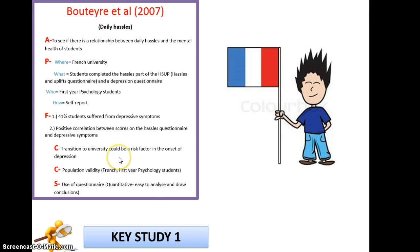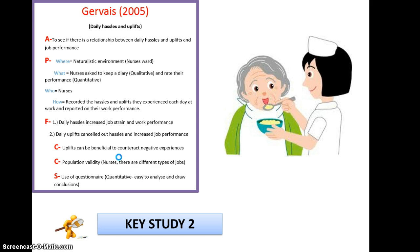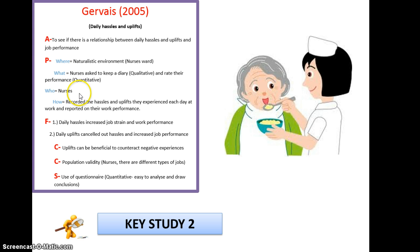Then we have Gervais, 2005 — dates aren't too important so don't stress over them. Gervais was also looking at daily hassles and uplifts, but in relation to job performance in nurses. What they did was ask nurses to keep a diary — generating more qualitative data — and rate their performance basically on how well they performed particular tasks on a given day on a scale of one to ten.